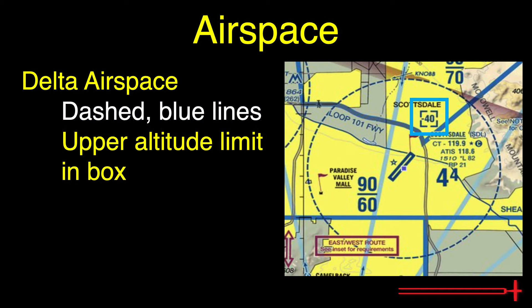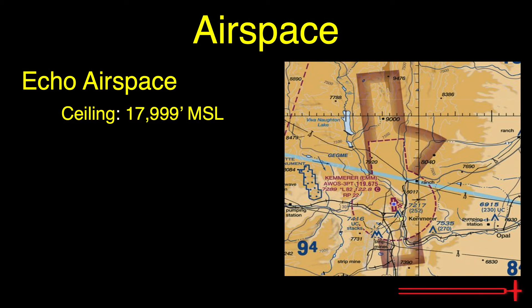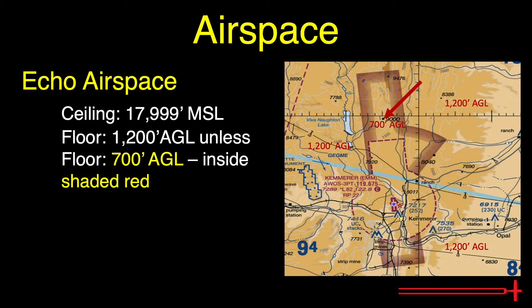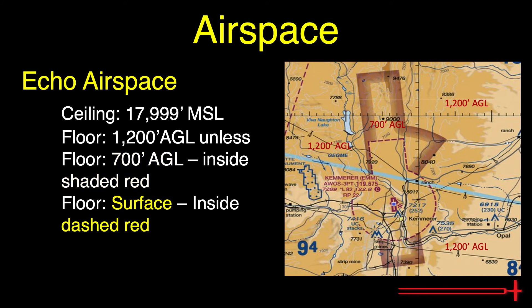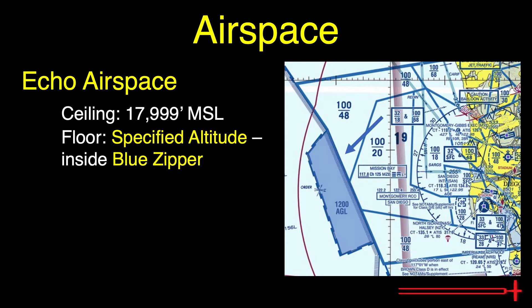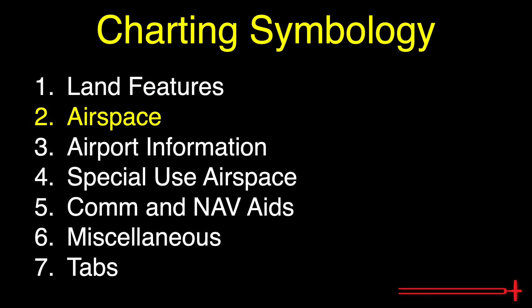Delta airspace is depicted by a dashed blue line. The upper limit is depicted in hundreds of feet MSL, and a minus sign means up to that altitude but not including. Echo airspace has a ceiling of 17,999 feet MSL. Echo with its floor at 1,200 feet AGL exists everywhere that Class Bravo, Charlie, or Delta airspace does not exist. The floor extends down to 700 feet AGL inside magenta shading, and down to the surface inside dashed magenta lines. Echo with floors other than these three altitudes is depicted inside a blue zipper pattern. Golf airspace exists underneath Echo.